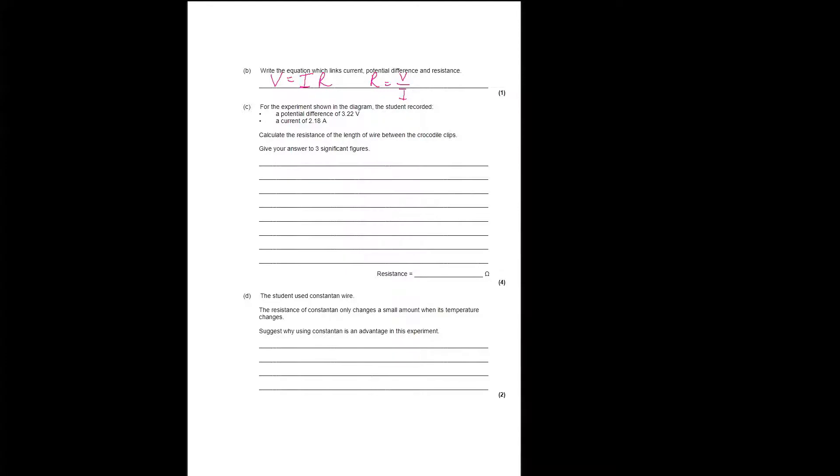You can give it in symbol format as long as you get it correct, or you could write: potential difference equals current times resistance.